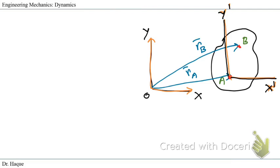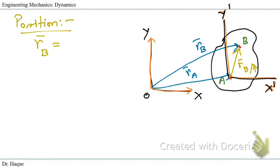The position vectors of points A and B are defined as r_A and r_B. The position of point B with respect to A is defined as r_{B/A}, same as we learned in previous chapters. By definition, the position vector relationship is: r_B = r_A + r_{B/A}. This is our position equation.